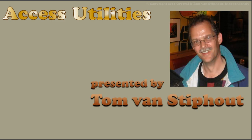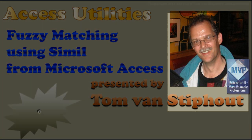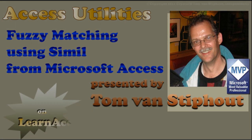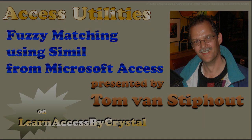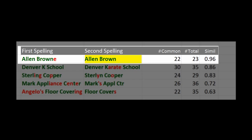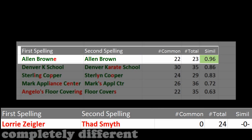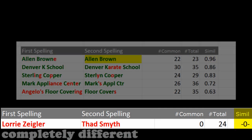Hi, this is Tom van Stiphout, and I'm going to be talking about Simul today. Simul is an algorithm that compares two strings and returns the similarity between those two as a number between 0 and 1, with 0 meaning completely different and 1 meaning identical.